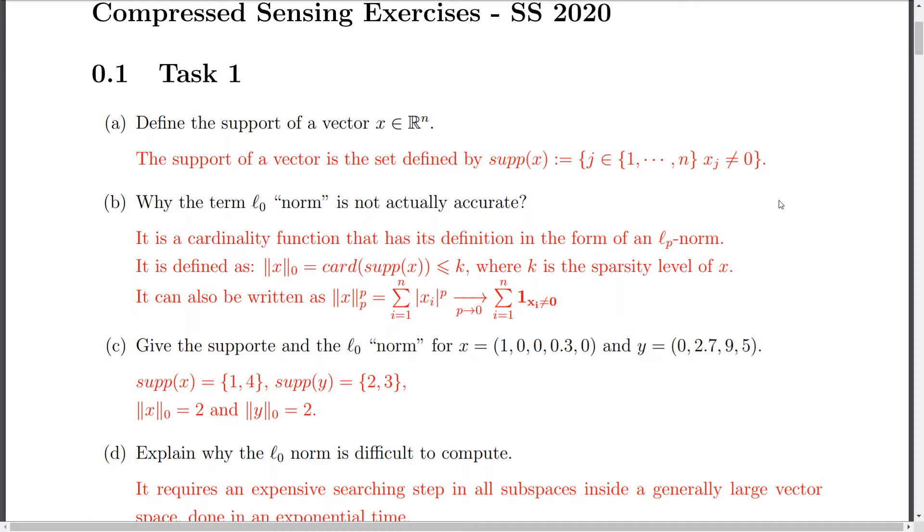So here, the L0 norm of our vector x is the cardinality of the support set that we already know how to calculate from the previous question. And if we would like to bring this down to the way we write norms in general, then we could use the same notion for the norm. But here we have the p is tending to be zero.